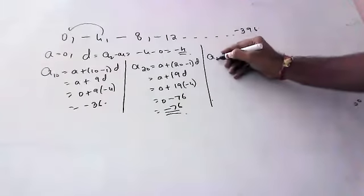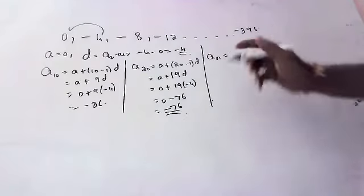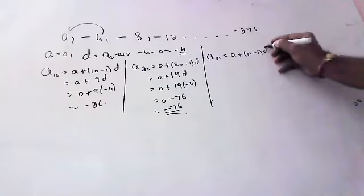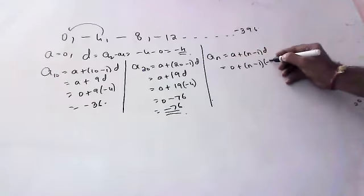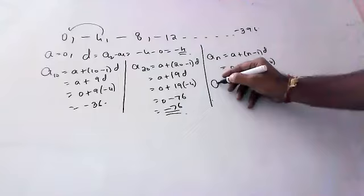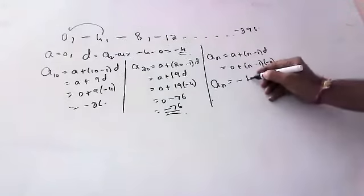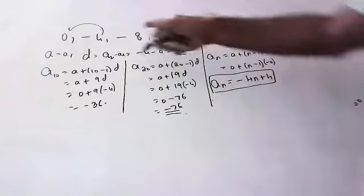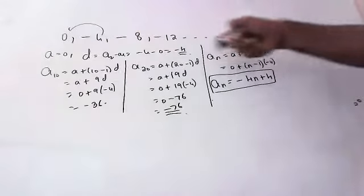Now for the nth term formula, we use aₙ = a + (n−1) × d. a is 0 and d is −4, so the nth term = 0 + (n−1) × (−4) = −4n + 4. The nth term formula for this sequence is −4n + 4.